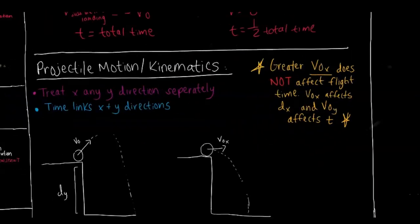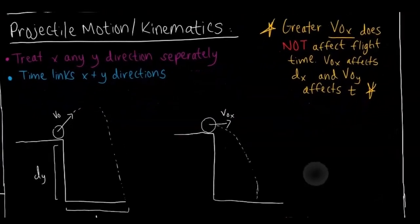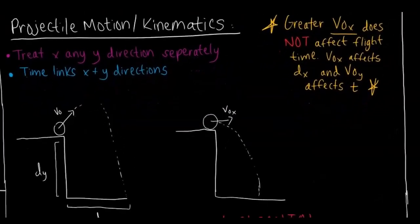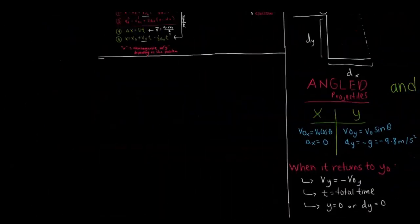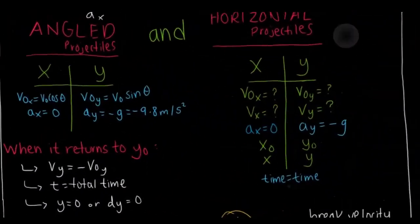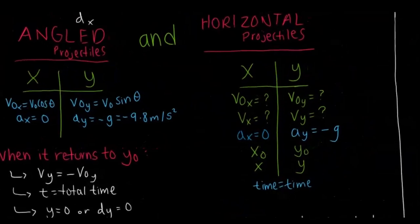When you get comparison questions about how long things take or drawing graphs, that's something you want to take note of. Another thing is that time links the x and y directions. When you draw your times table like x and y in order to see what variables you're missing, what you can do is find time using one of the either x values or y values with the uniformly accelerated motion graphs. Then you can use that to find the missing values for the other side in order to get your answer.